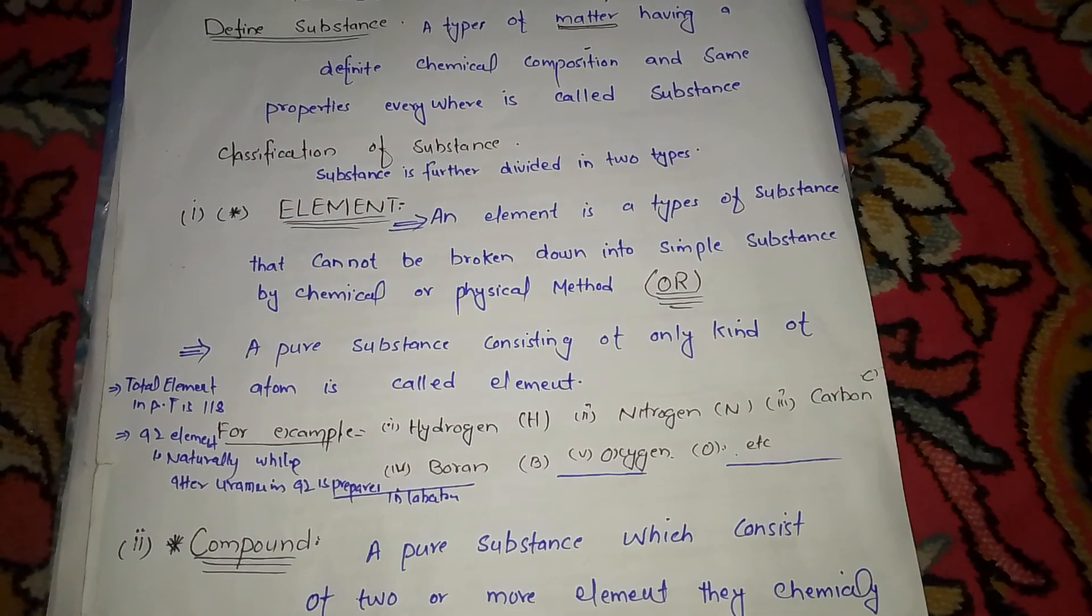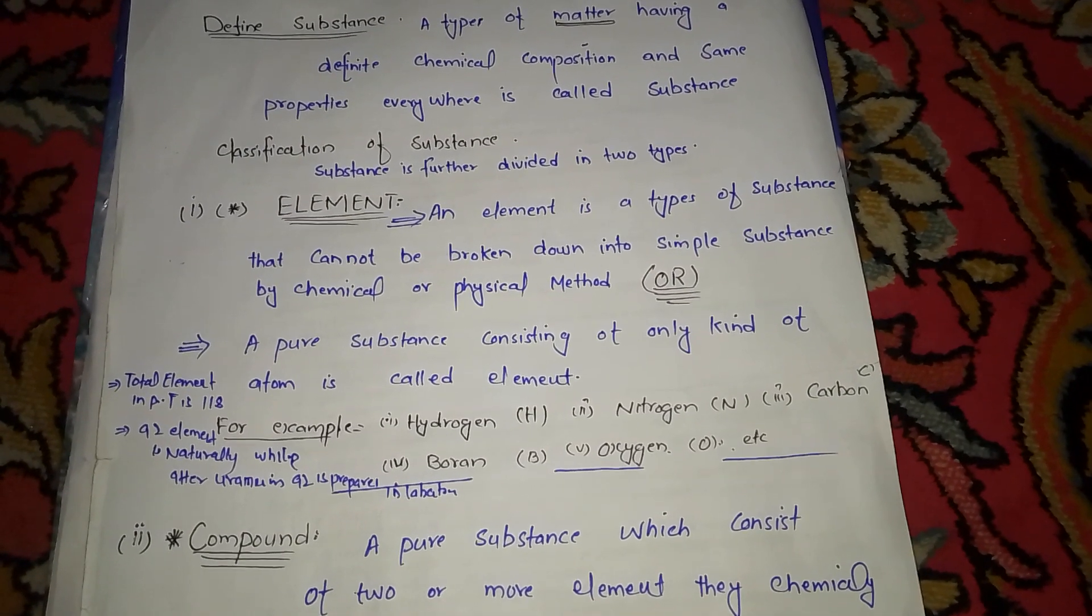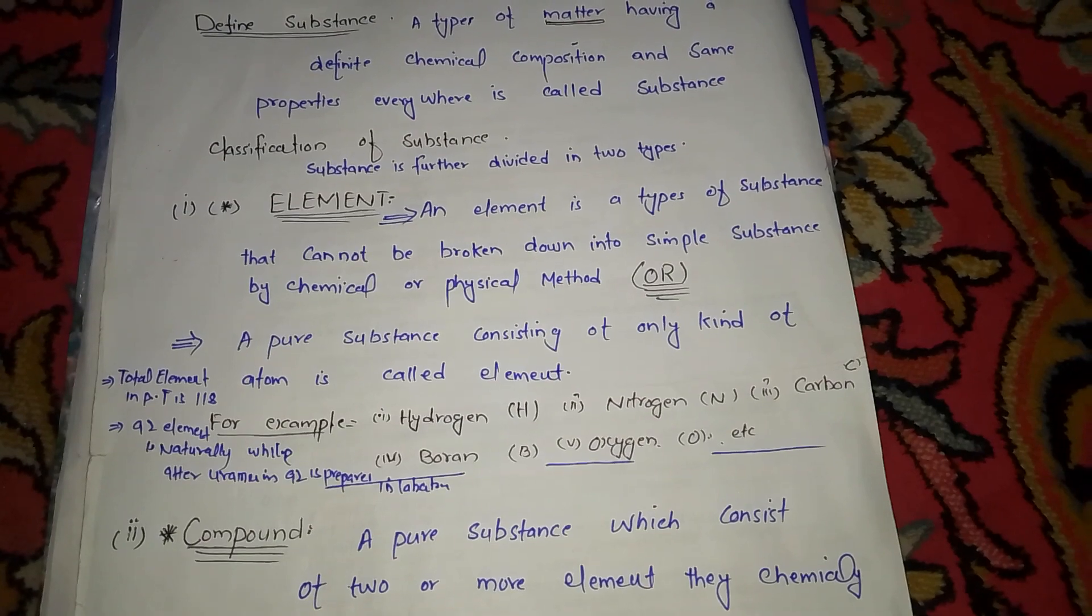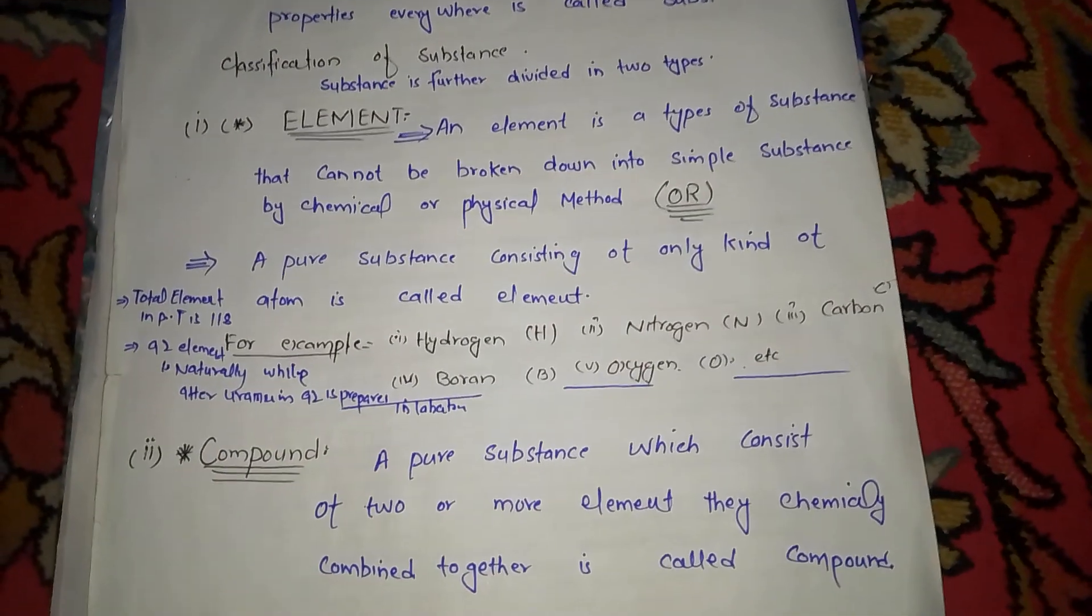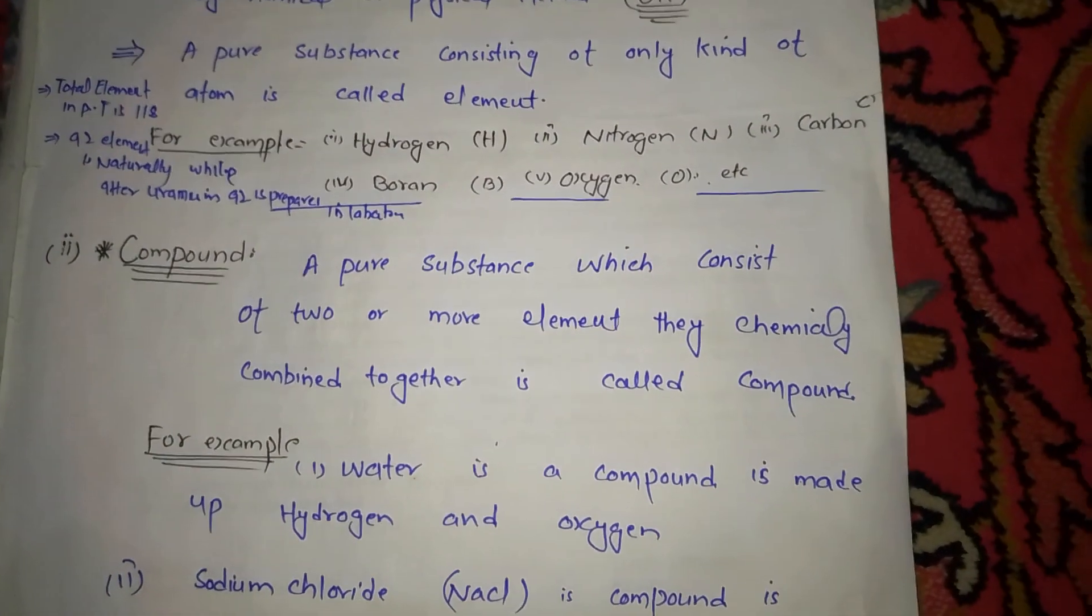Elements after uranium, atomic number 92, are prepared synthetically in laboratories.